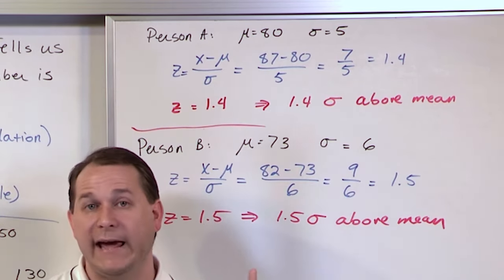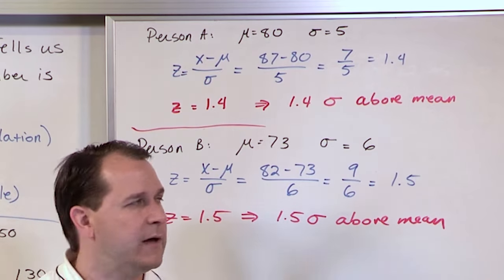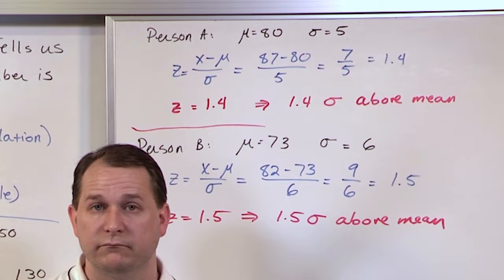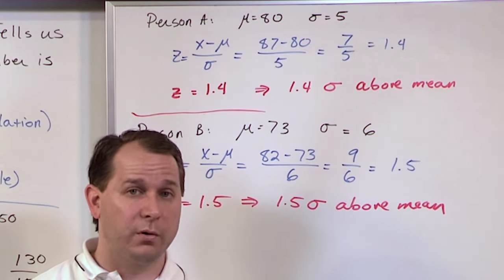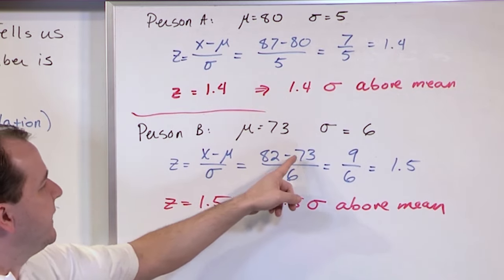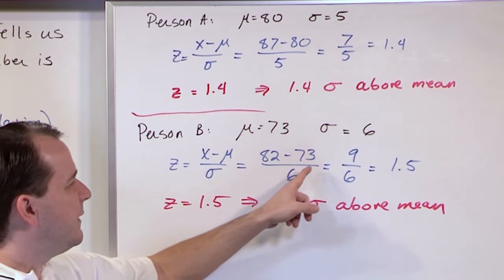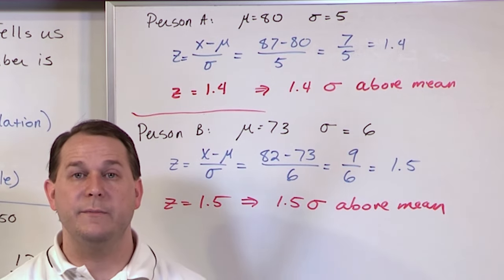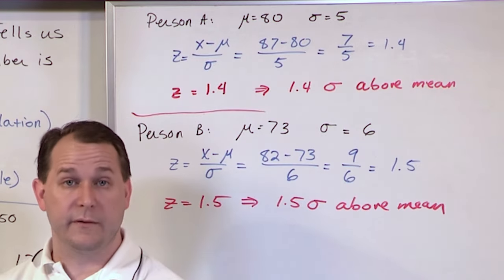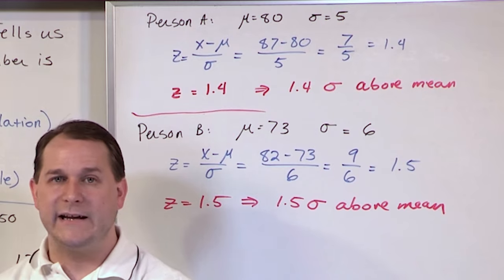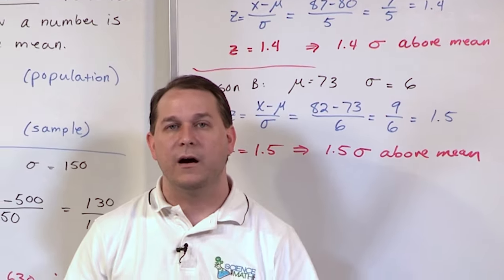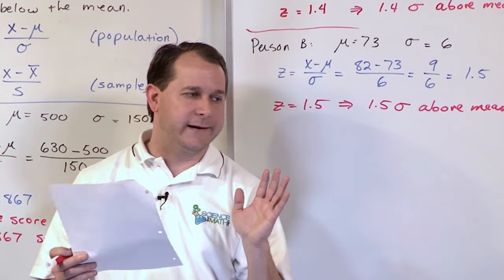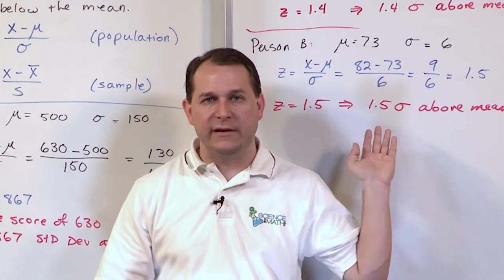The Z-score can actually be negative, and it's very frequently negative. Let's say Person B's grade was 65 instead of 82 — they didn't do well, very much poorer than the mean. We would have 65 minus 73, giving a negative number on top; we still divide by 6 and we get a negative Z-score. So if they got negative 1.5, that means they were 1.5 standard deviations below the mean. Z-scores can be positive or negative — positive means that many standard deviations above the mean, negative means below it. Very common, don't be alarmed.